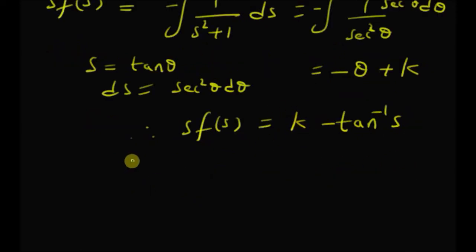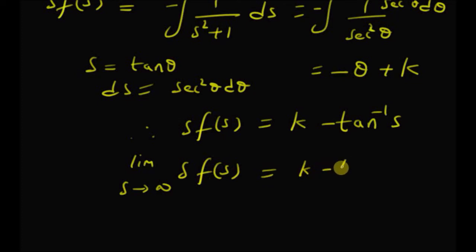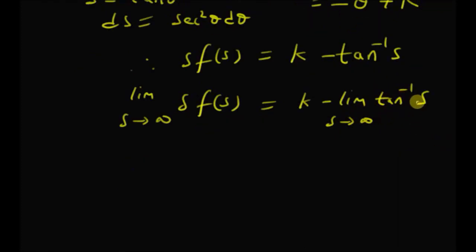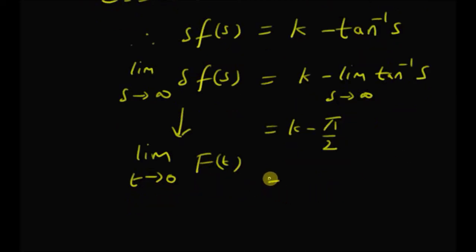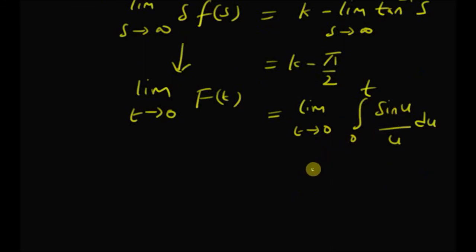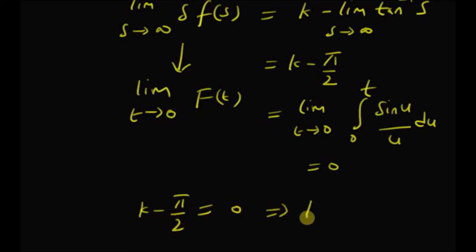Now we have to find the value of the constant k. By using the initial value theorem, the limit as s tends to infinity of s times F of s equals k minus the limit as s tends to infinity of tan inverse s, which is pi by 2. So this equals k minus pi by 2. The limit on the left hand side is equal to the limit as t tends to 0 of f of t. By the definition of the sine integral, this is the integral from 0 to t of sine u by u du, and clearly in the limit this integral equals 0, because both limits of integration are 0. Therefore, k minus pi by 2 equals 0, which means k is equal to pi by 2.